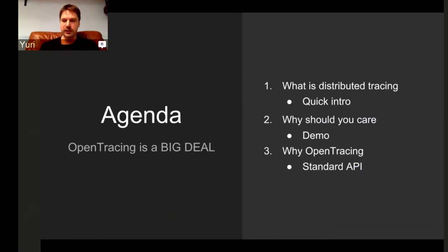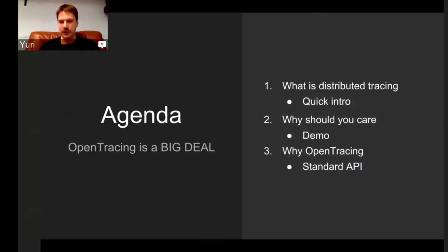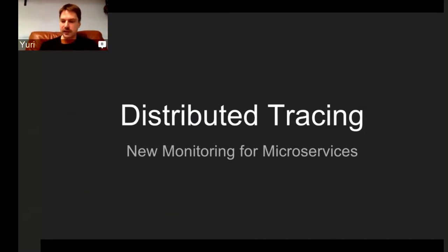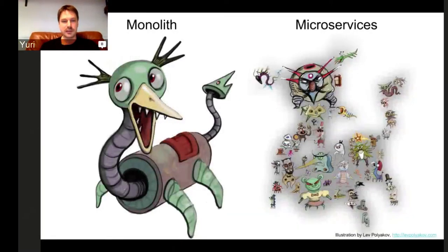Today I'm going to demonstrate why open tracing and tracing in general is a big deal in the microservices world. I'll do a quick intro into what distributed tracing is, assuming some people may not know exactly what it is. I'll also show a demo to demonstrate why it's useful on an example application. Distributed tracing is a new way of monitoring for microservices. To show why we need a new way, I want to show a rendering of microservices versus a monolith application.